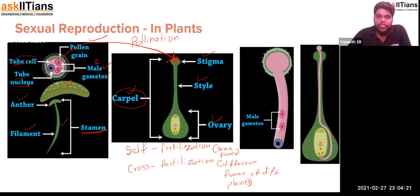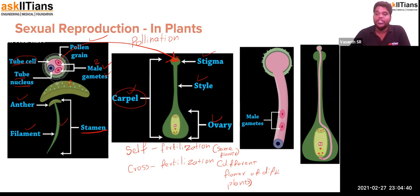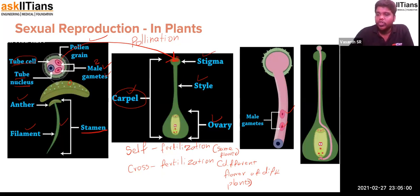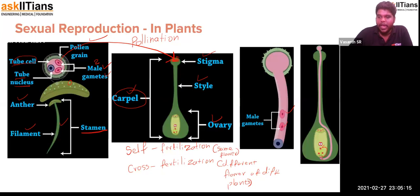The tube cell protrusion is directed by the tube nucleus. The tube nucleus literally directs the formation of the pollen tube all the way to the micropylar end of the ovule — the lowermost open region of the ovule. The tube nucleus is followed by the two male gametes, which travel along the tube to the micropylar end. Once the tube reaches the micropylar end, fertilization can occur.